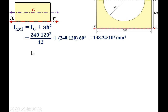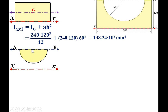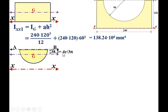Now for Part 2 — the semicircle. We want the moment of inertia about the XX axis. The distance given in the figure is 120. Let axis AB pass through the center of the semicircle. The CG of the semicircle is located at a distance of 4r/3π from AB. With radius r = 90, that gives 4×90/3π = 38.2 mm. So the distance from AB to the centroidal axis is 120 − 38.2 = 81.8 mm.